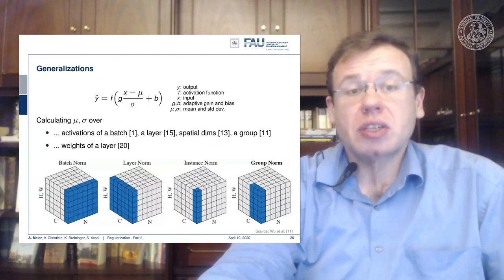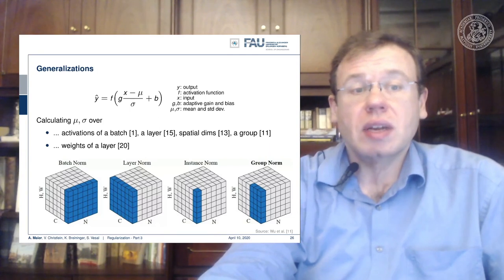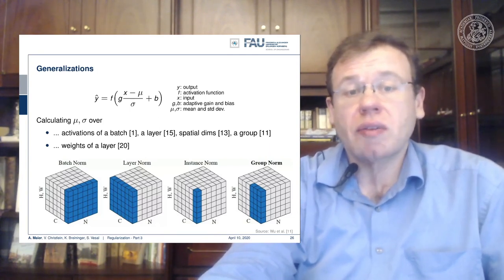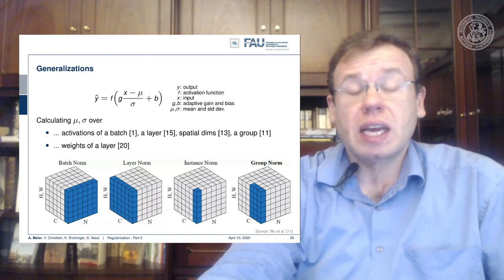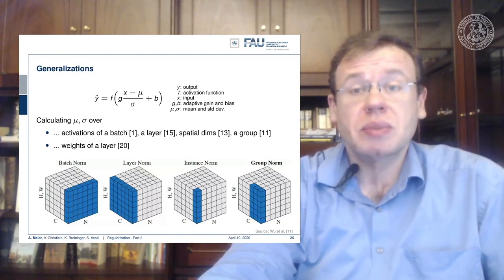There's generalizations of batch normalization. You can calculate the mu and the sigma over activations of a batch, over a layer, over spatial dimensions, over a group, over weights of layer. There's many different variations of batch normalization. And that's also a very powerful tool.